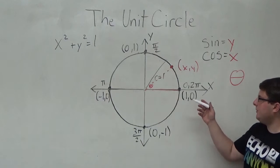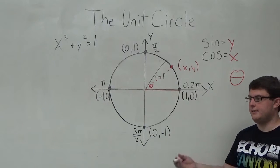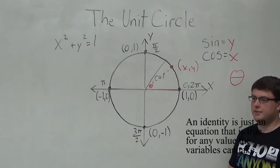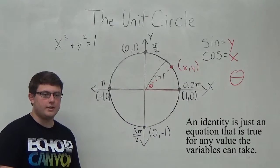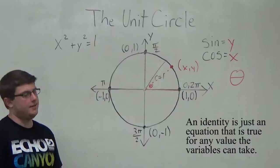The final thing we can find using the unit circle is we can define a few Pythagorean identities. These are simple shortcuts for calculating the sine or cosine of an angle.